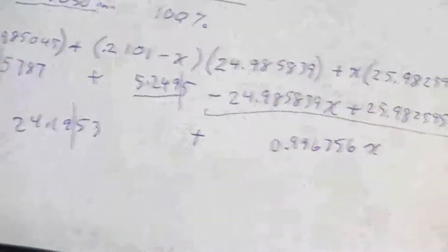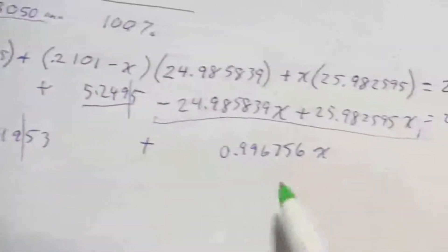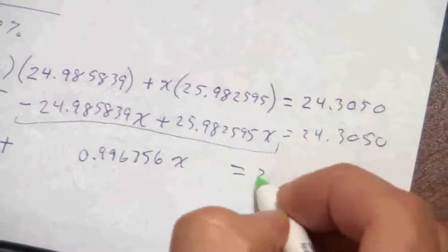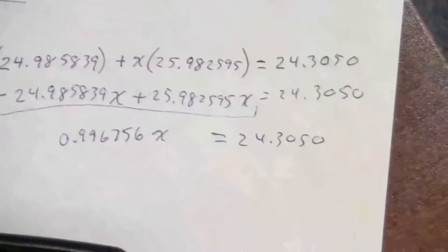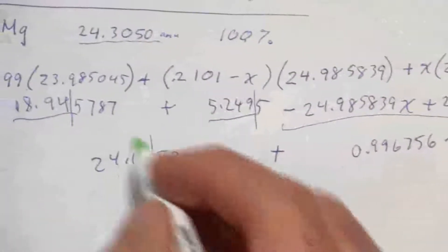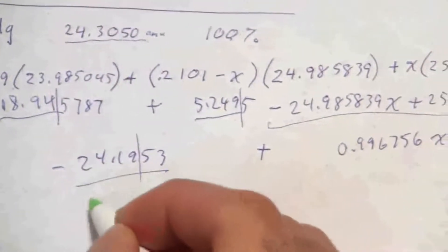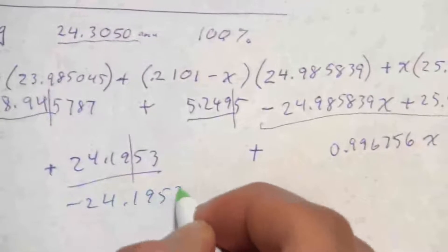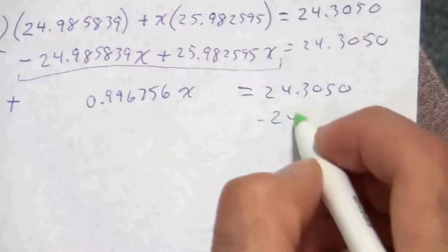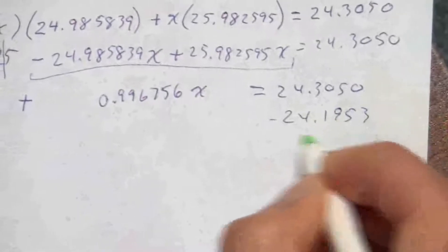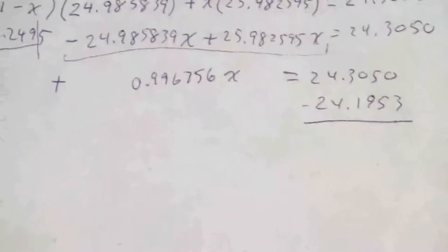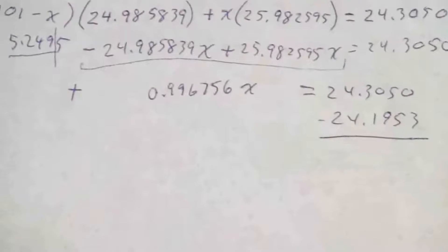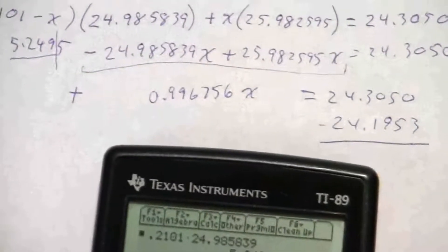So now this boils down to 24.1953 plus 0.996756x equals 24.3050. So we're almost there. Let me subtract both sides—subtract this, let me do it down here—24.1953 from both sides, minus 24.1953.